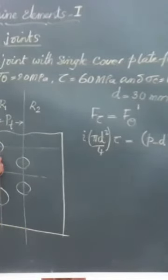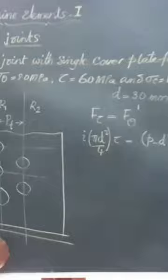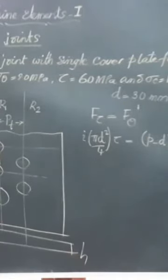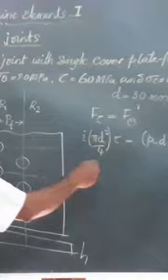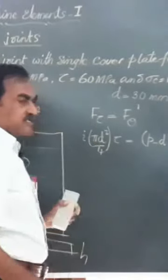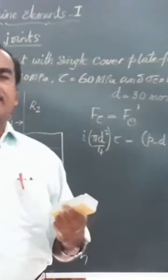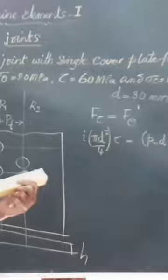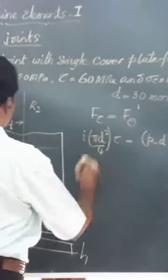So this is p minus d by 2d, this value will be p minus d. Thickness of the plate is h. So this gap into h will give you the area, multiplied by tensile strength will give you the tensile strength of the perforated plate or the resistance offered by that.